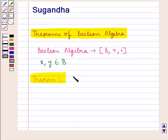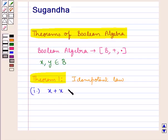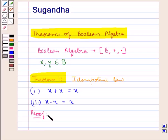First we have the idempotent law. In this we have x plus x is equal to x, and x into x is equal to x, where x is an element of the set B. Let us now see the proof. We will first prove x plus x is equal to x.